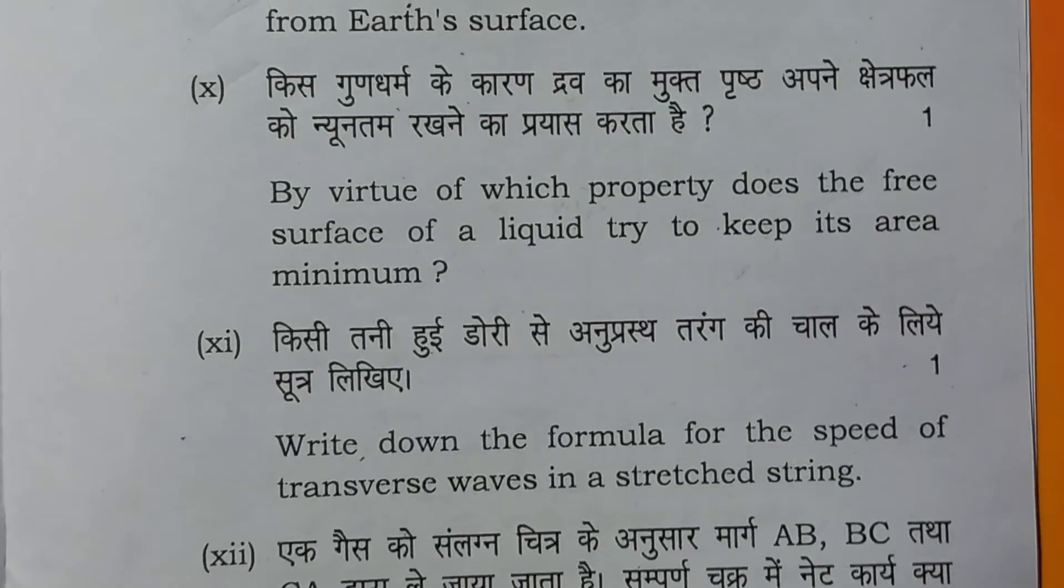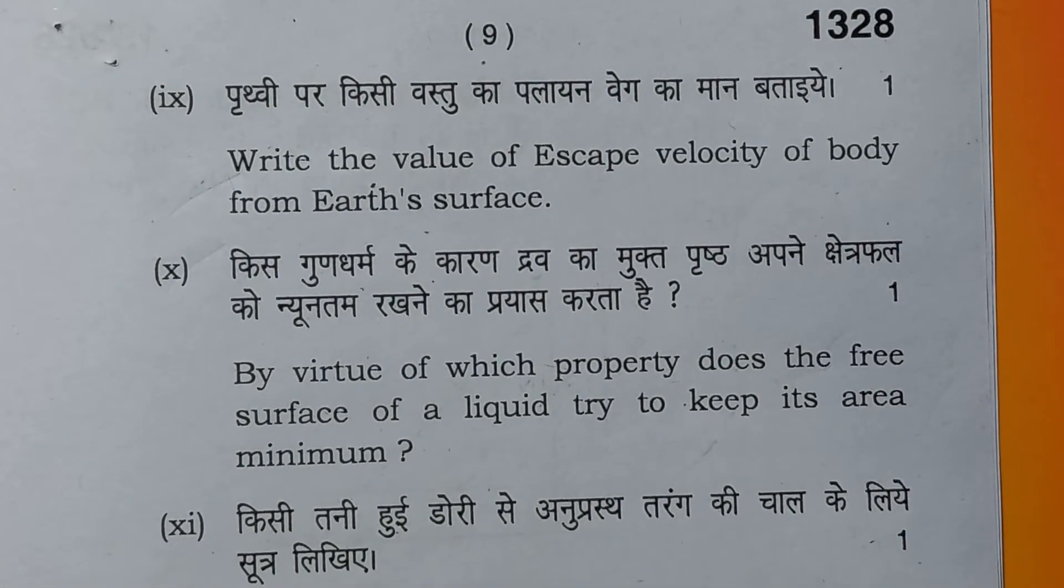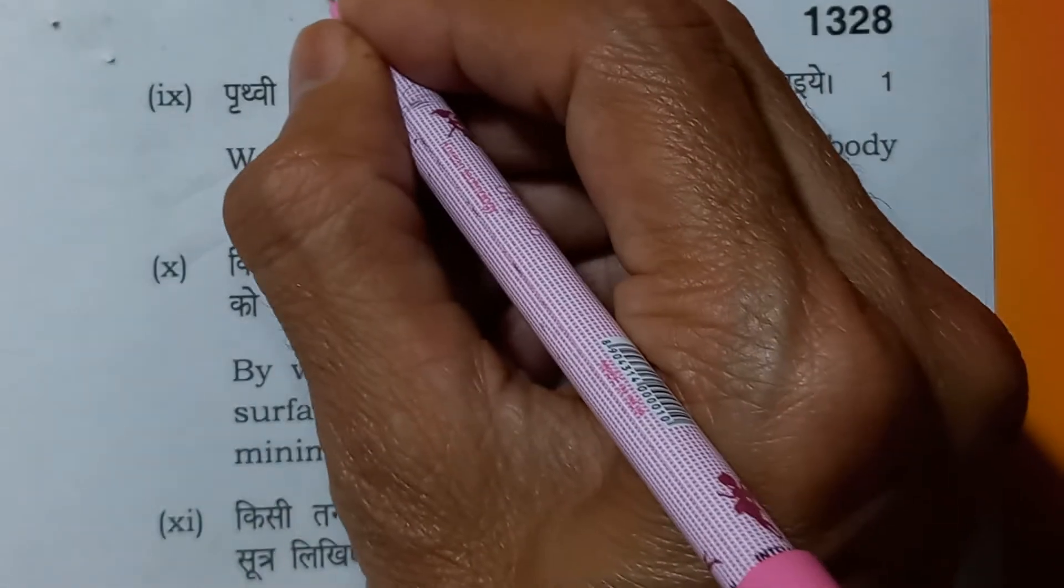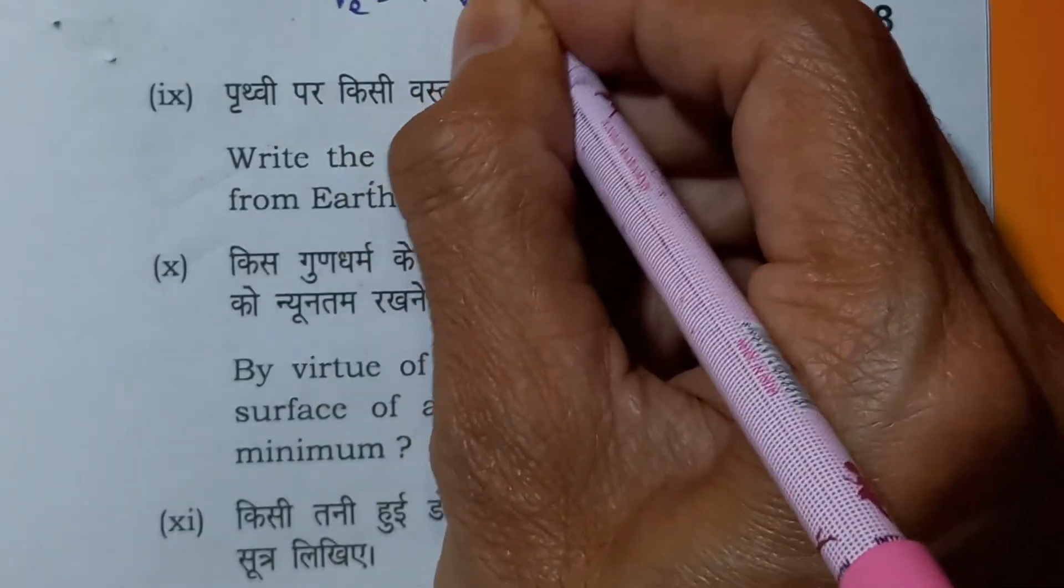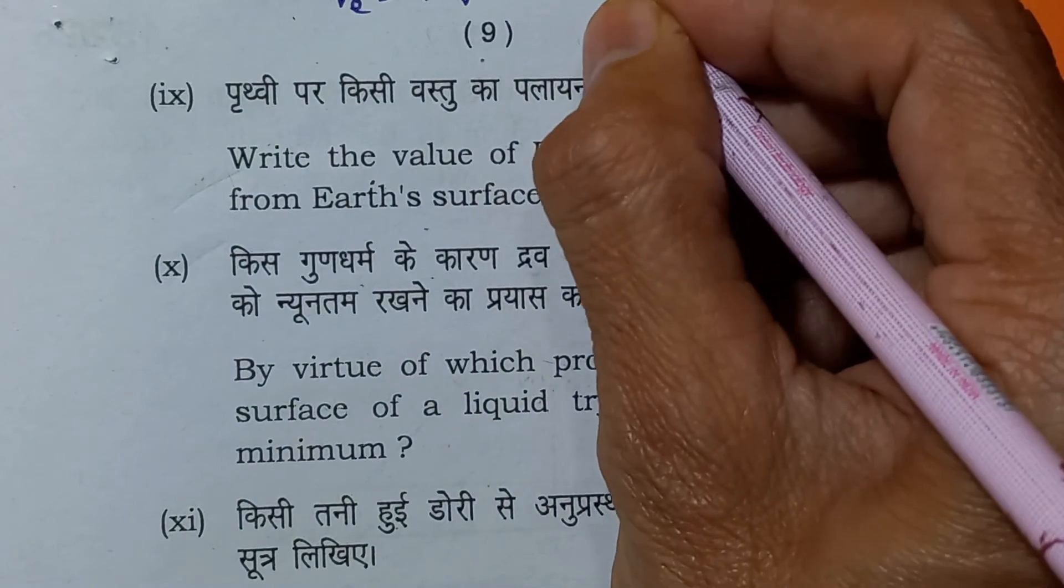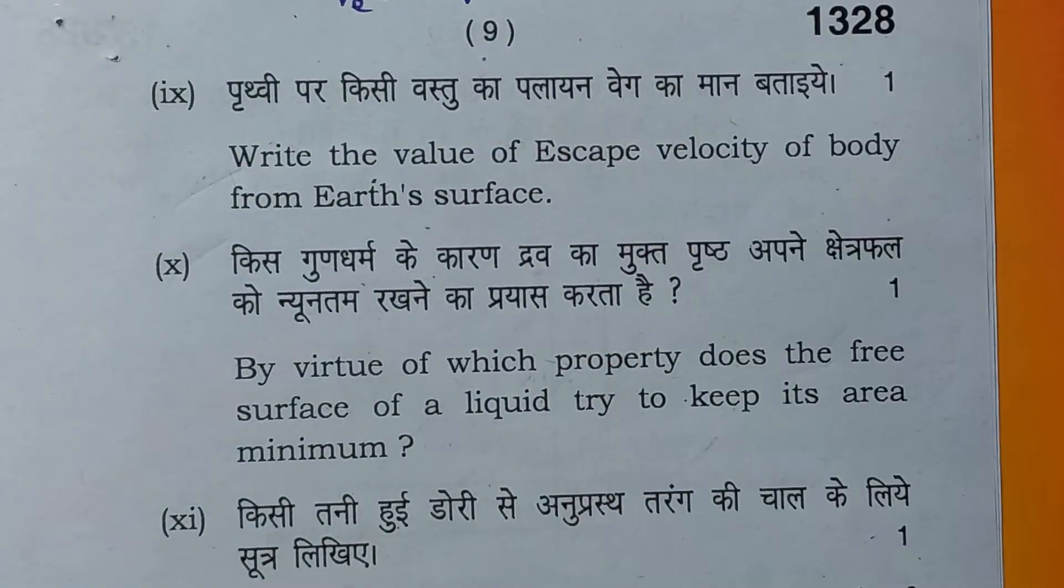Now, write the value of escape velocity of a body from Earth's surface. We know that escape velocity is square root of 2GR and it is 11.2 kilometers per second.